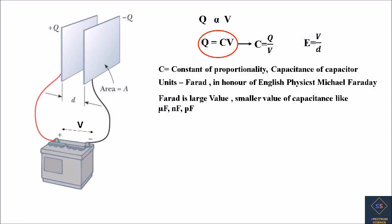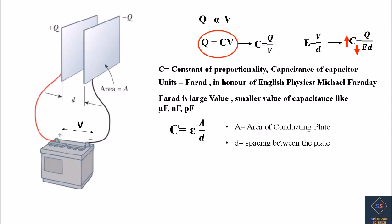The electric field inside a capacitor equals V/d, where V is the voltage applied across its plates and d is the separation distance between the plates. So we can rewrite capacitance as C = Q/Ed. As we have seen, with the insertion of a dielectric inside a capacitor its electric field decreases, so its capacitance increases. For a parallel plate capacitor, capacitance is given by C = εA/d, where A is the area of the conducting plate, d is the spacing between the plates, and ε is the permittivity of the dielectric, equal to ε₀ times εᵣ, where ε₀ is the permittivity of air and εᵣ is the relative permittivity of the dielectric.